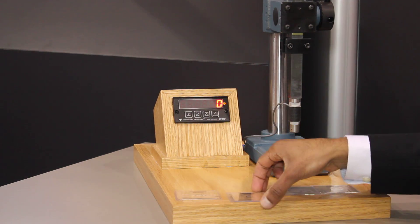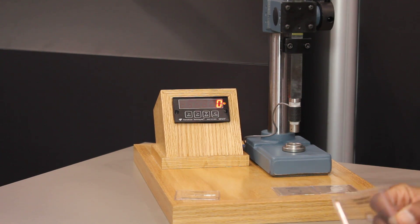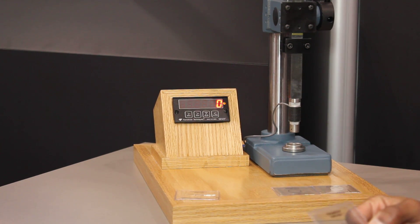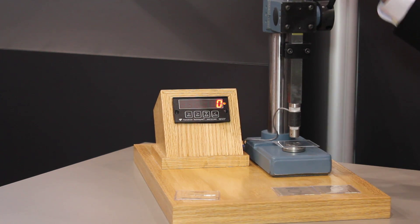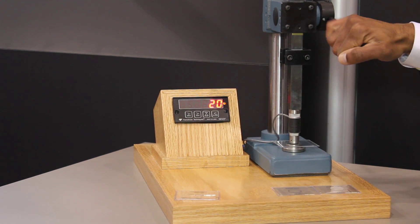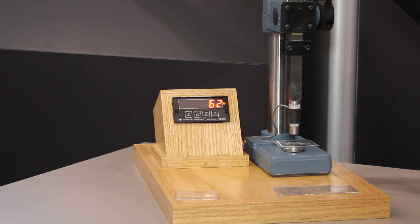I'll reset the lever. I'll go to strengthened soda lime glass. Again, 1.1mm thick. I'll put that in. It's a little bit harder, but not a whole lot more. 62 pounds to break the glass.